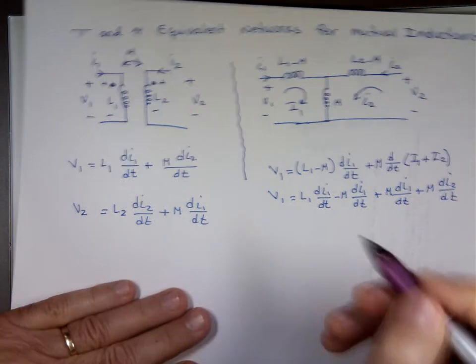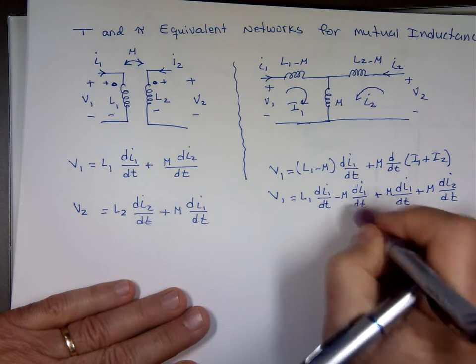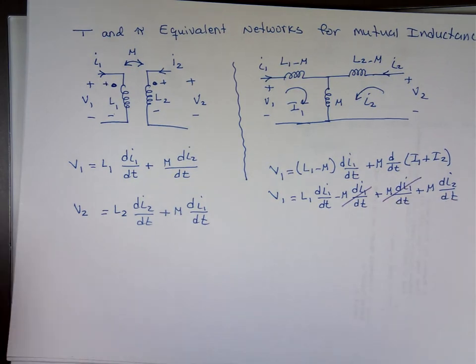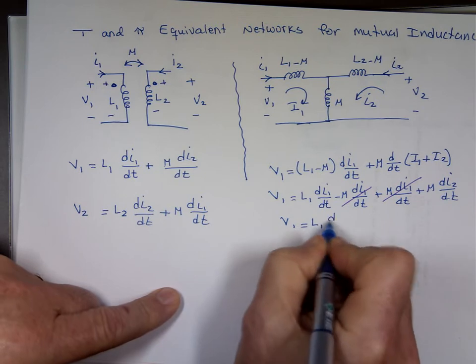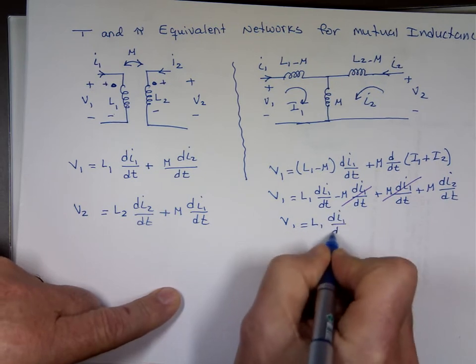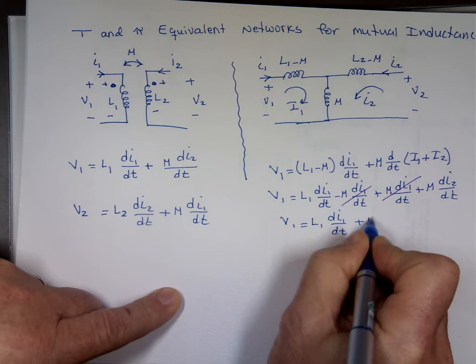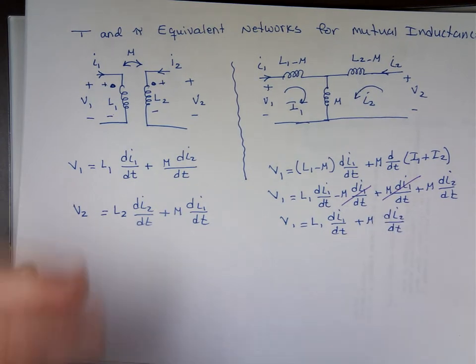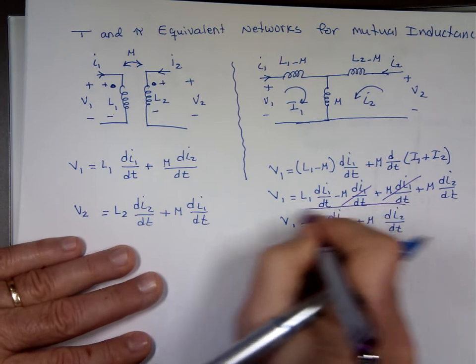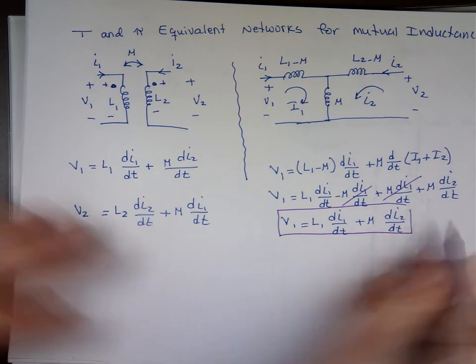Notice these two will cancel each other out. And you end up with V1 equals L1 di1 dt plus m di2 dt. And that matches V1.